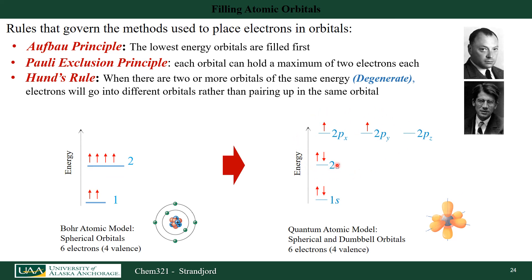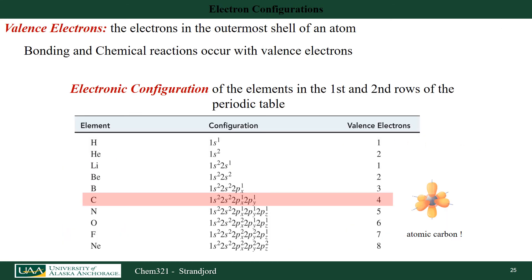Valence means electrons all in the same shell, though they can be in different subshells. For carbon: two electrons in the 1s shell, two in the 2s subshell, one in the 2px subshell, and one in the 2py subshell — six electrons total, with four in the outermost shell (n=2) being the valence electrons that do chemistry. Everything discussed so far has been atomic carbon — an isolated atom that has not formed any bonds.